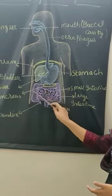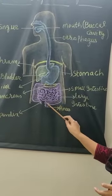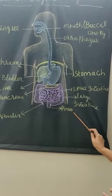And from there, it moves to the large intestine. Undigested particles are passed through the anus.